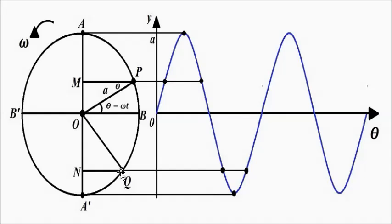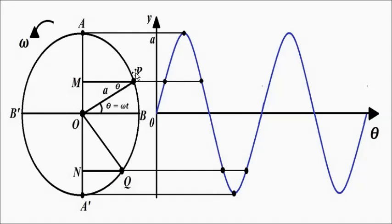When the particle reaches point Q, we draw perpendicular QN touching the diameter at N, and we measure distance ON. If we extend these perpendiculars and join the points at various positions on the circular path, we get a sinusoidal curve. When the particle reaches A, drawing a perpendicular gives the maximum distance — the peak.